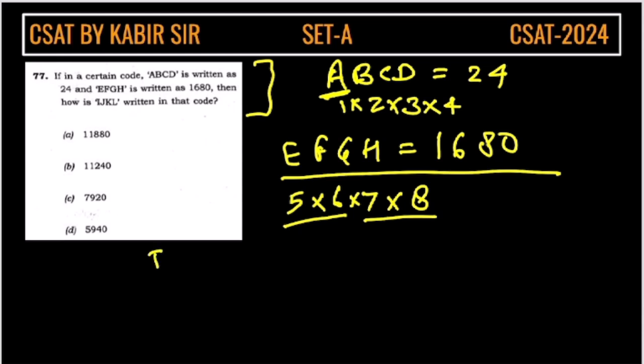So similarly, we have to find for IJKL. So this is at 9th position, this is 10 and this is 11 and this is 12.